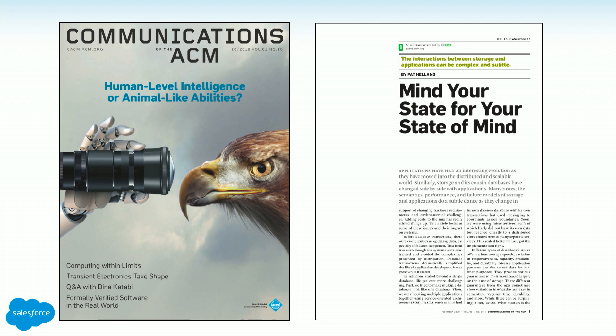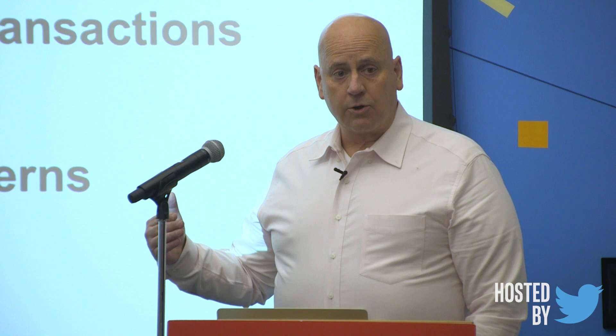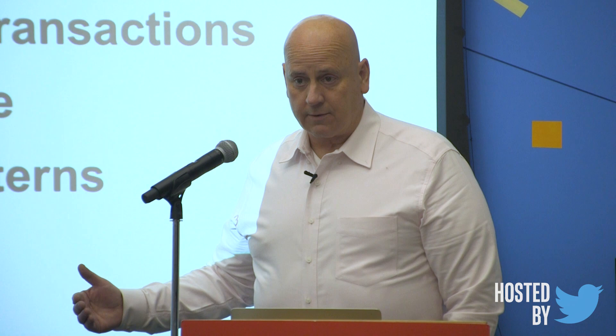Introduction. We're going to talk about what state is, how durable state semantics have evolved, session state semantics and how that relates to transactions, some work I did in the 90s, how that's evolved, how microservices impact that, identity, immutability, and scale. We'll walk through some example application patterns to see that the patterns are real and have different implications based on business needs. The big takeaway is: different business needs cause different systems to be built. There's no one right thing — it's not one size fits all.